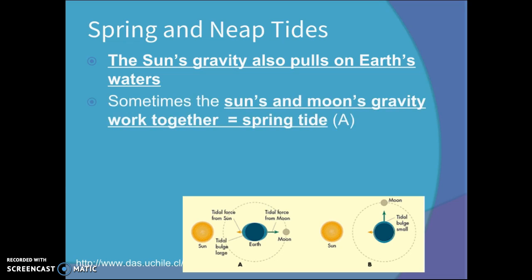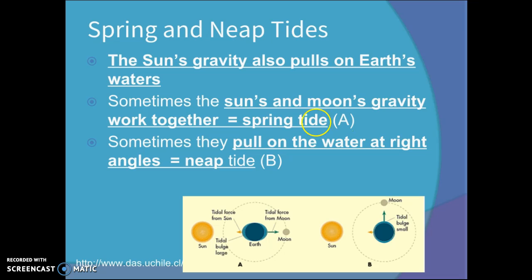So sometimes the Sun's and Moon's gravity work together, and that's when we end up getting a spring tide. Sometimes they pull on the water at right angles, and that's when we get a neap tide.